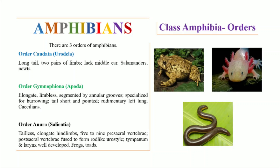The members of Order Caudata possess a long tail and they possess a tail throughout their life. They have two pairs of limbs and they lack a middle ear. They possess an inner ear that is used to detect substrate vibrations. It includes salamanders and newts.